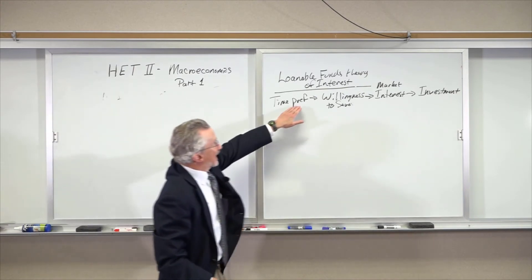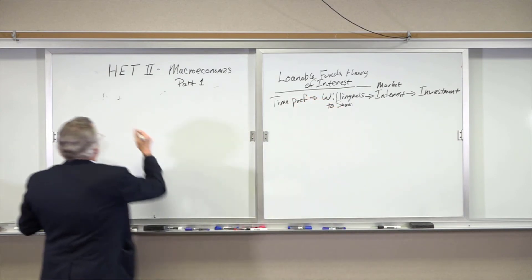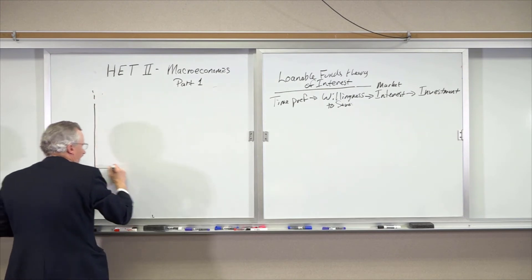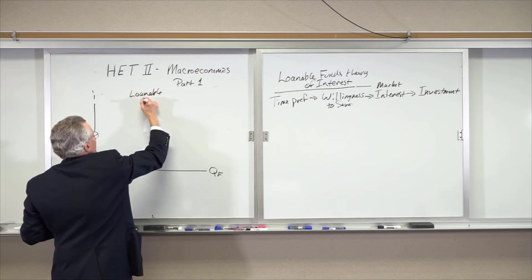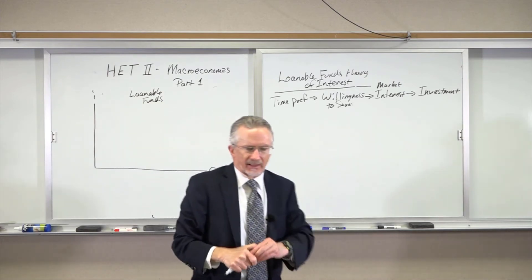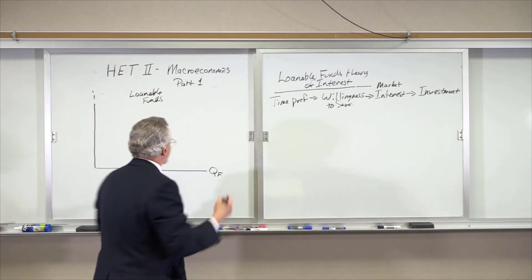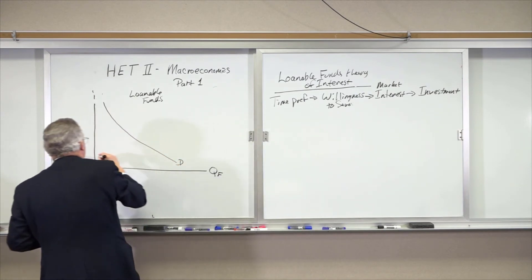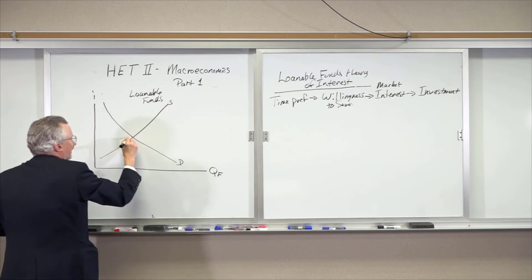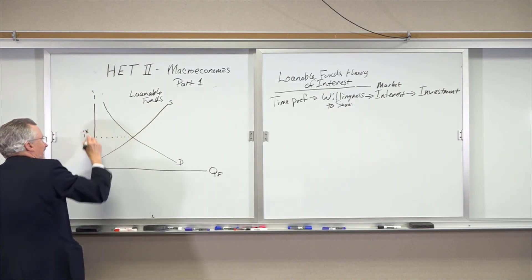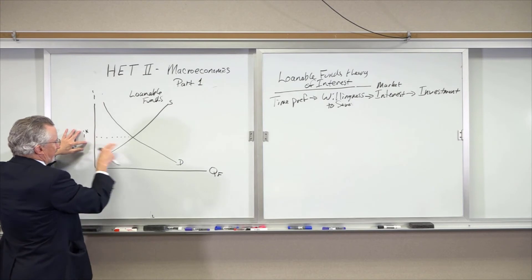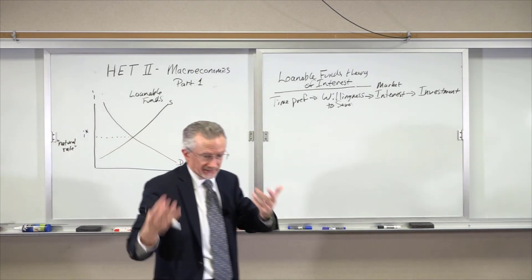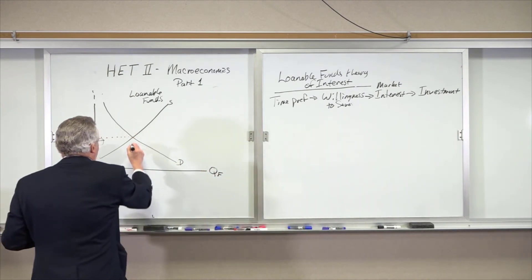We can show this graphically. Let's begin with a story of time preferences changing and willingness to save changing. On one axis we put the interest rate, on the other a quantity of funds available to be loaned out — the loanable funds market. We start with an equilibrium position: there's a demand curve and a supply curve for funds. There is an equilibrium natural rate of interest — a term that actually comes from Wicksell — one that reflects people's willingness to behave in the market, their willingness to save.